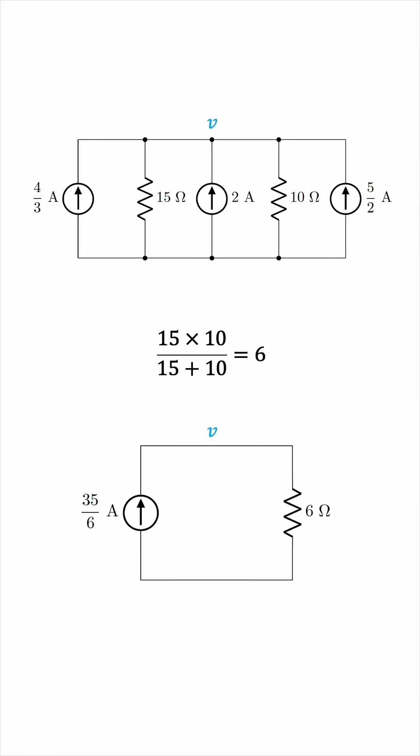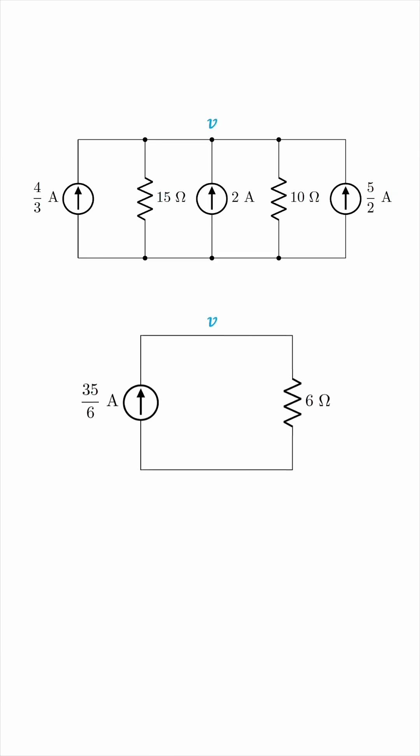So, we can find the voltage V by a simple application of Ohm's law. V is the voltage across this 6 ohm resistor, so we get 35 volts as the labeled quantity V.